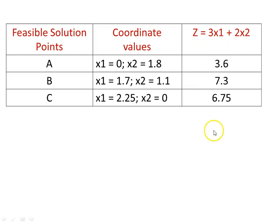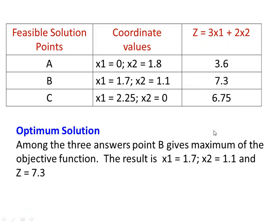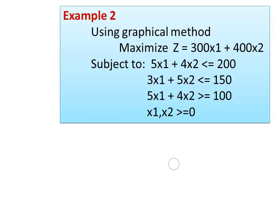Among the three solutions, which is the best answer — the optimum solution? Among the three answers, point B gives the maximum of the objective function. So the result is X1 equal to 1.7, X2 equal to 1.1, and Z equal to 7.3. This is the solution for the given problem using the graphical method.